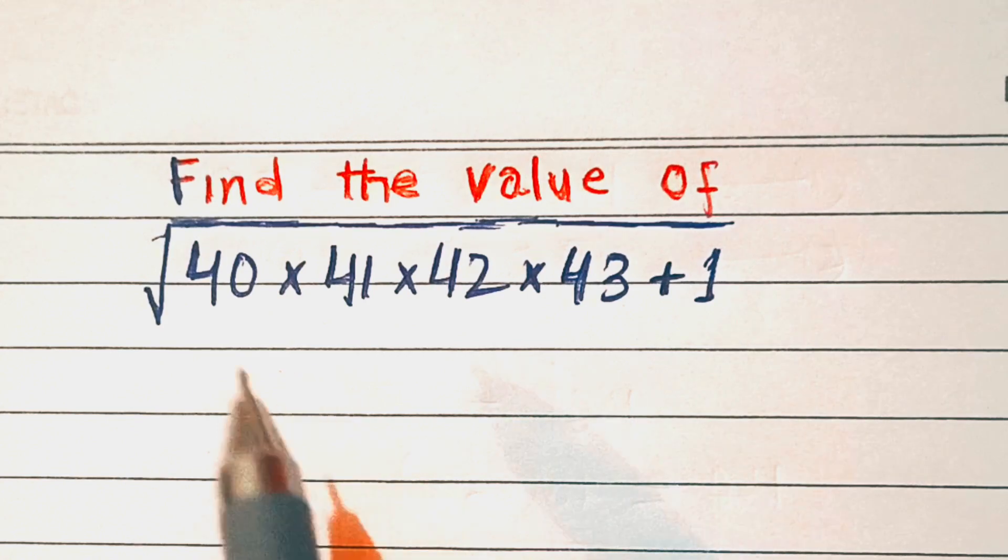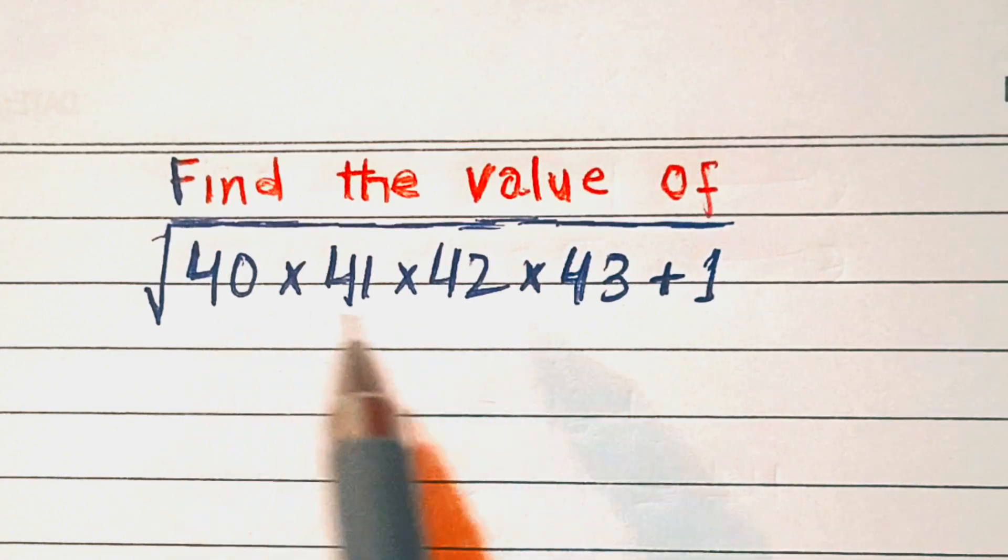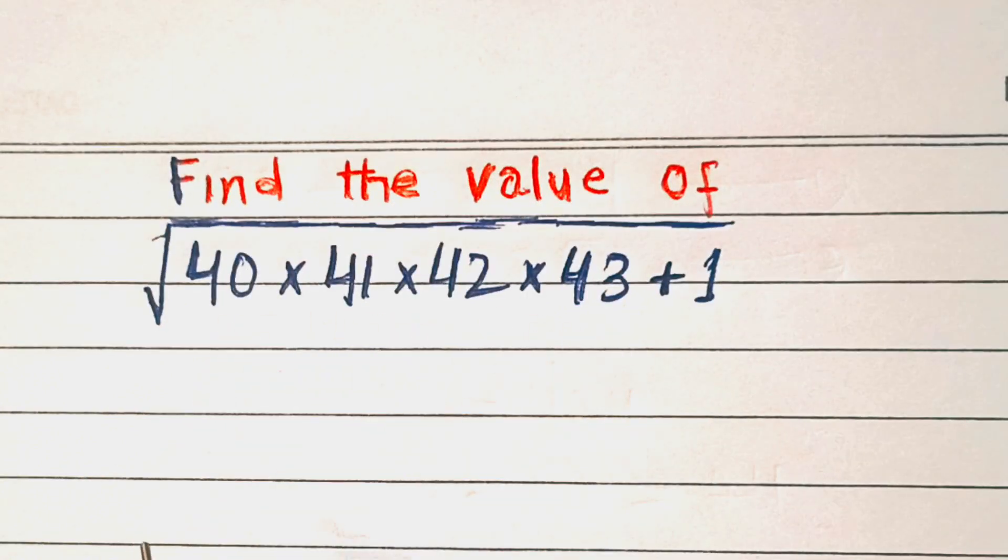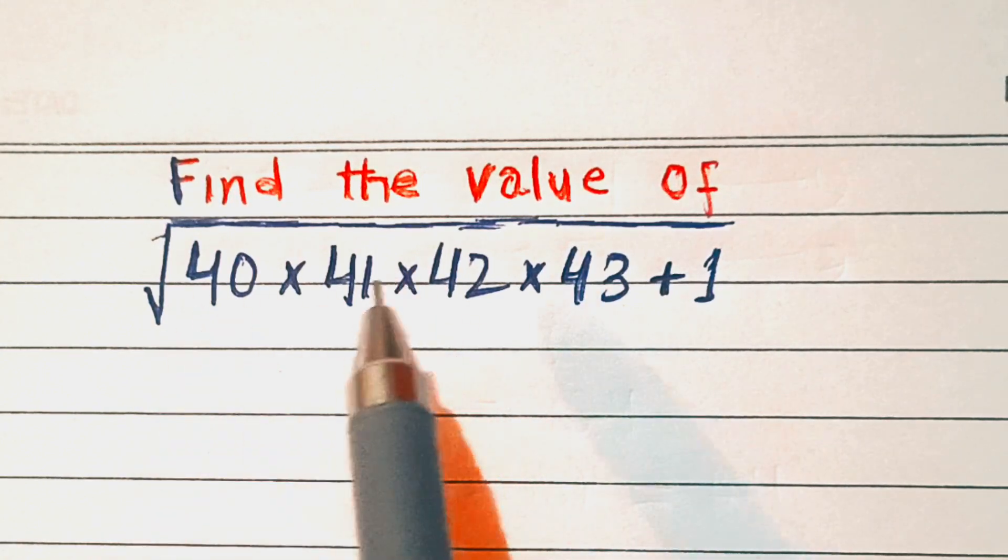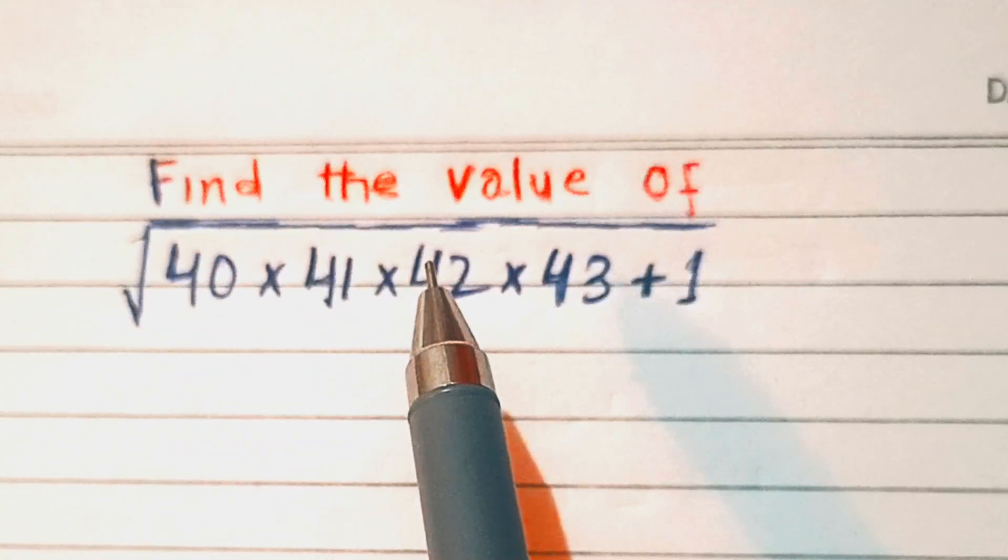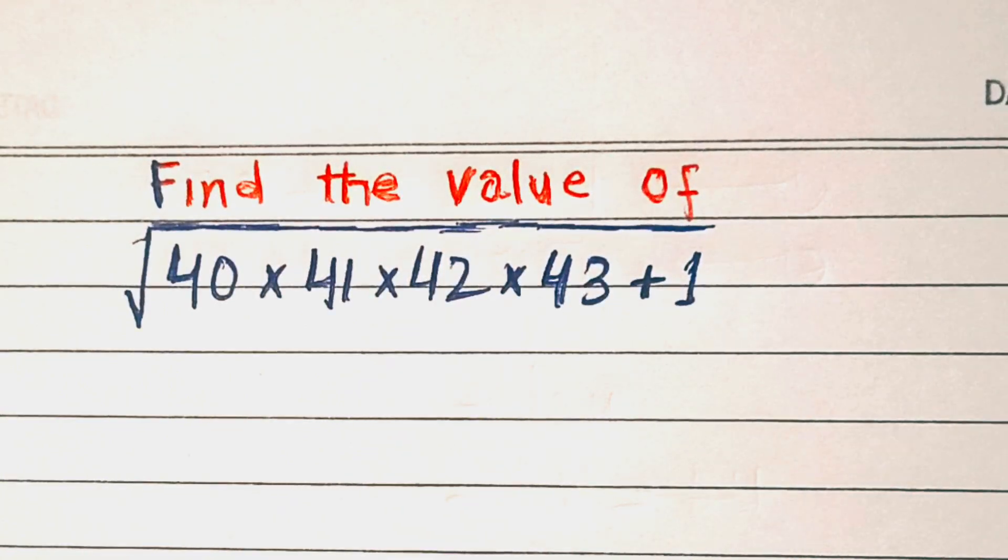We'll solve it by making this an algebraic expression. If we put 40 equal to x, then 41 will be x plus 1, and 42 will be x plus 2, and 43 will be x plus 3.